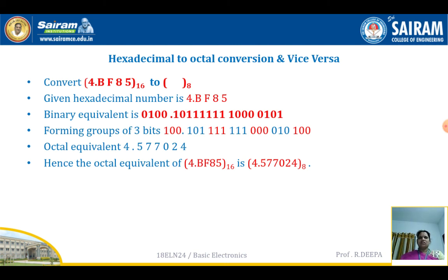The vice versa is the same process. For octal to hexadecimal, represent the given number in terms of 3-bit binary code, then group it in the form of 4 bits, and write the equivalent hexadecimal for each 4-bit group. This gives the final hexadecimal number. These are the basic conversions between hexadecimal to octal, octal to hexadecimal, and binary to octal.